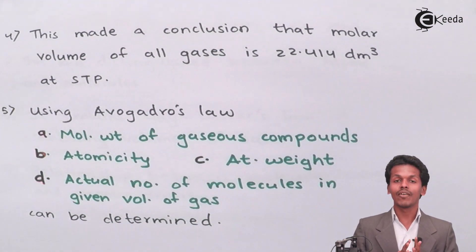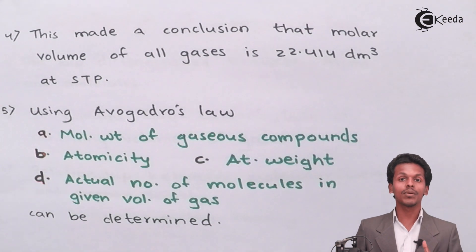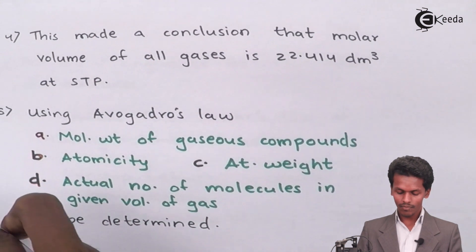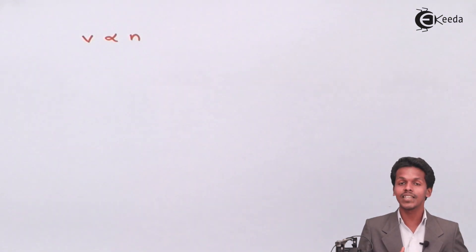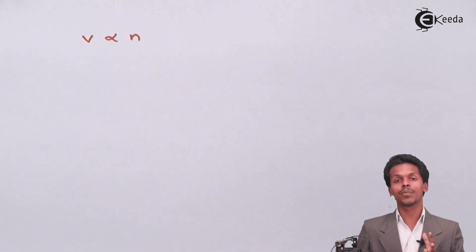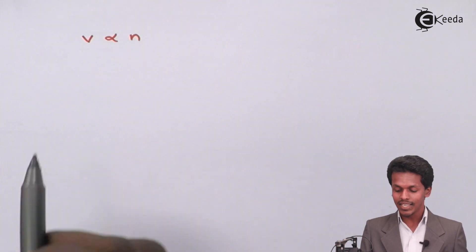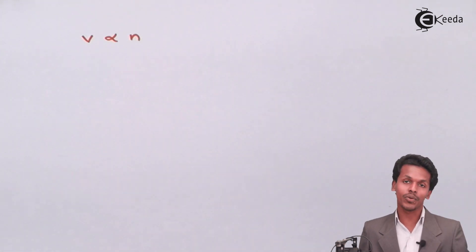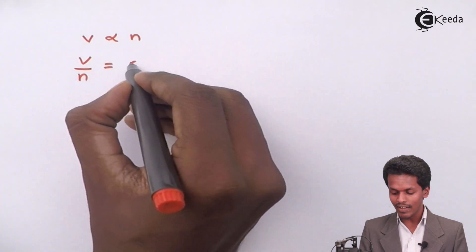Now let me tell you how Avogadro's Law plays an important role and how we derive the molar volume of 22.414 dm³. According to Avogadro's Law, if the volume of gases increases, the number of particles also increases — so volume is directly proportional to N. At STP, if the number of particles increases, the volume will also increase. Therefore, volume is directly proportional to the number of particles of gaseous molecules at STP. We also know that V divided by N gives a constant value.